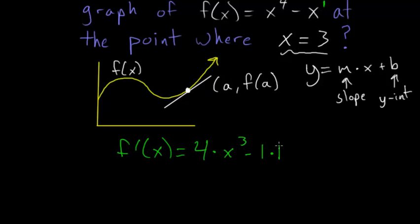which simplifies to 4x^3 - 1 and notice that the degree of this polynomial, the derivative, is exactly 1 less than the degree of the function and now we just have to evaluate the derivative at the x value of 3